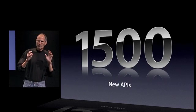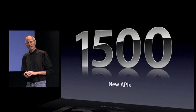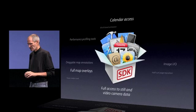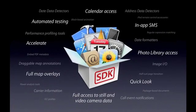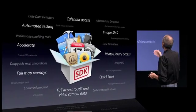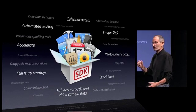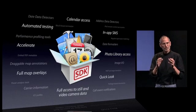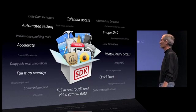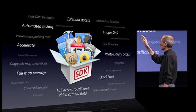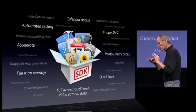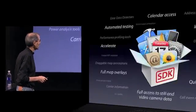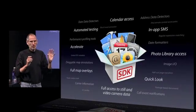iPhone OS 4 delivers over 1,500 new APIs to developers — a lot of stuff that developers have been asking for. Developers can now access the calendar, the photo library. They have full access to still and video camera data, Quick Look, and they can put SMS inside their apps. We are releasing our automated testing tools — the same tools we use to test our apps — to our developers so they can test their apps with them. And we're releasing a framework called Accelerate, which has over 2,000 APIs for hardware-accelerated math functions, not counted in the 1,500. So if their application is heavy into math, they can really take advantage of this. And these are just a few of the over 1,500 APIs.